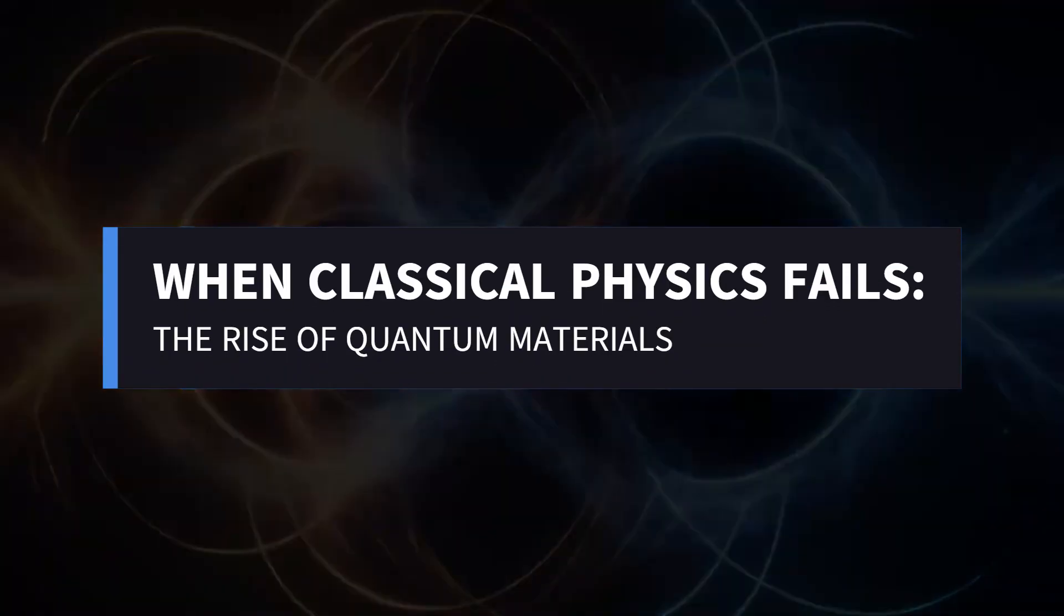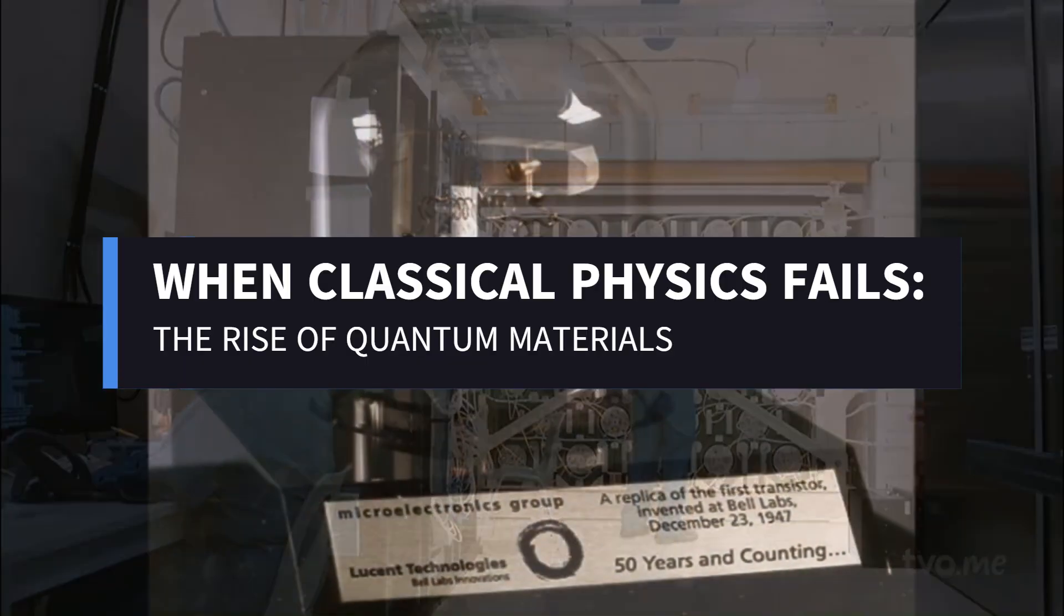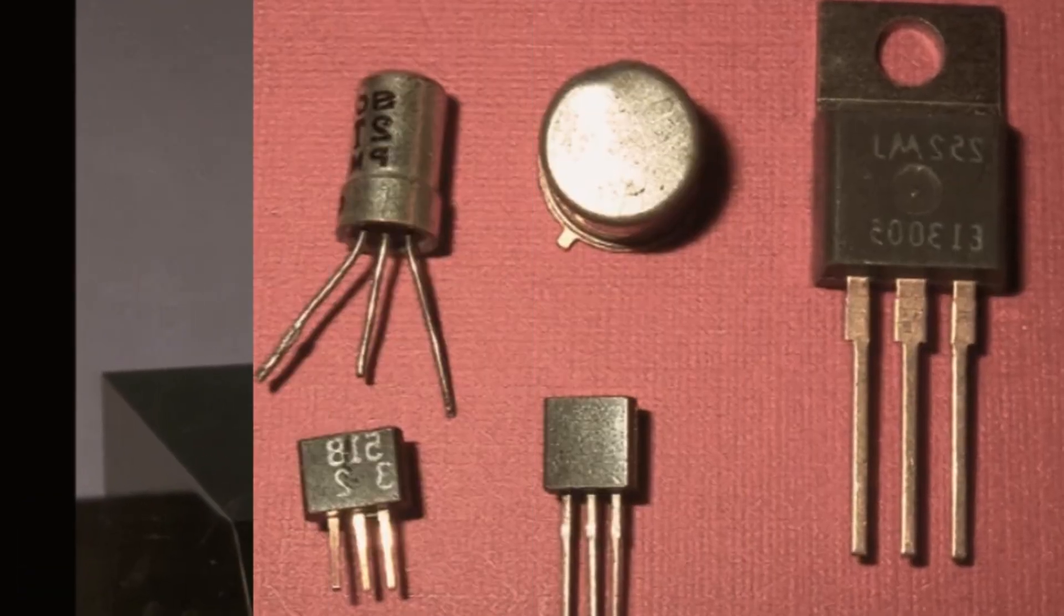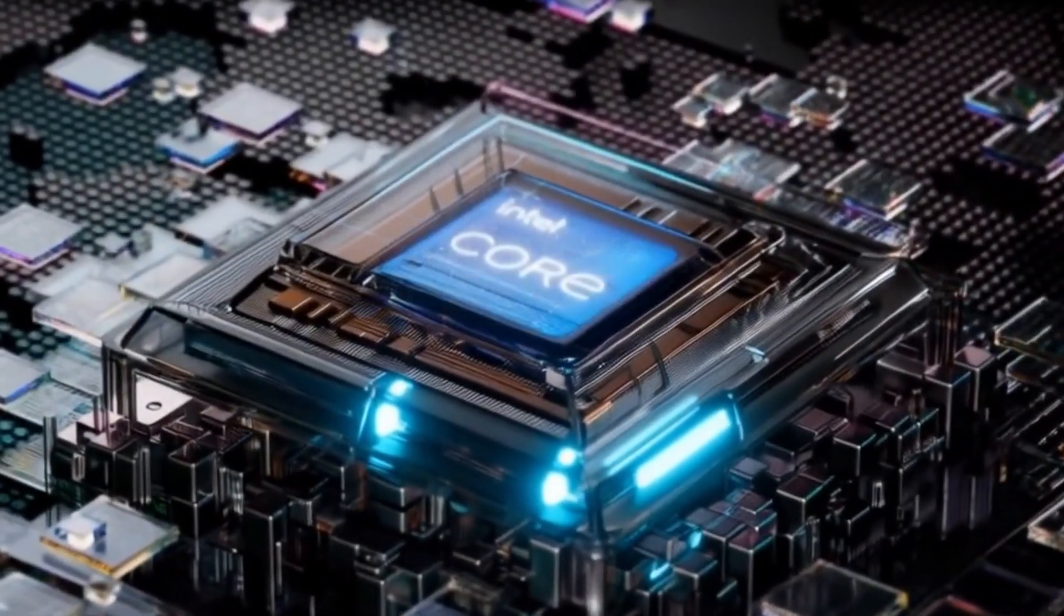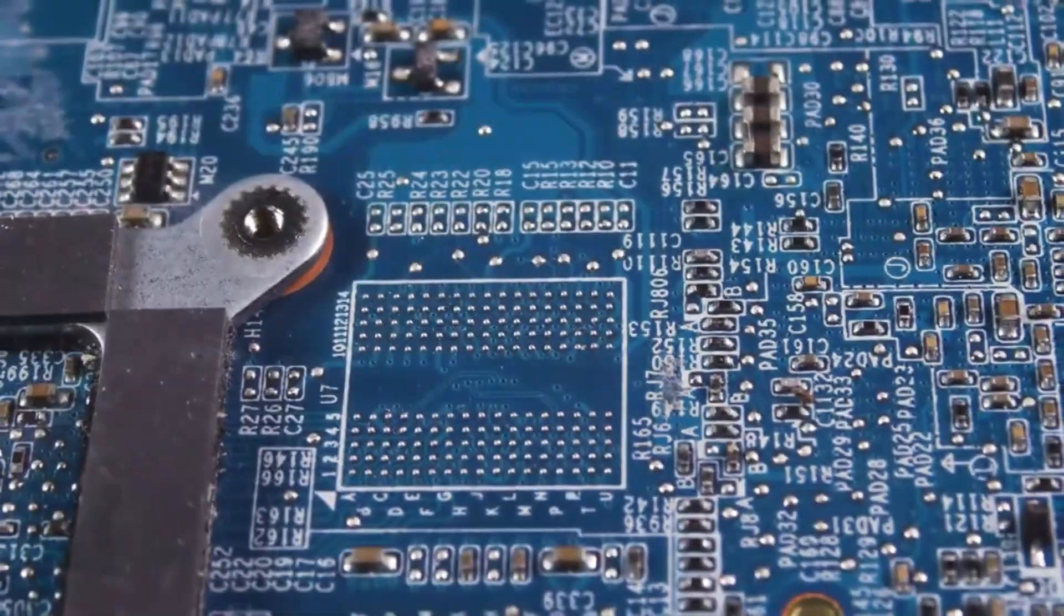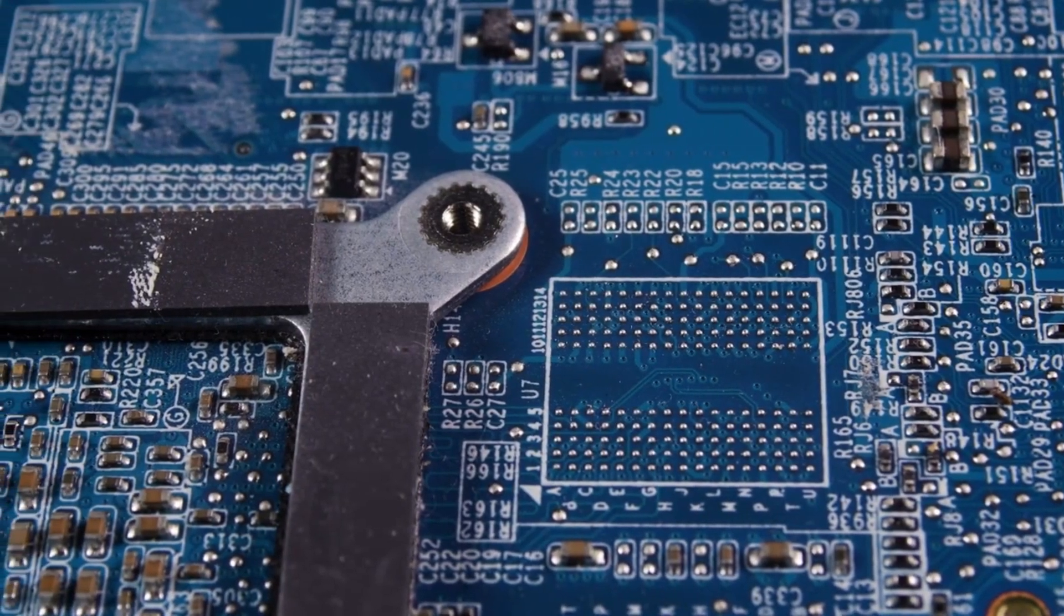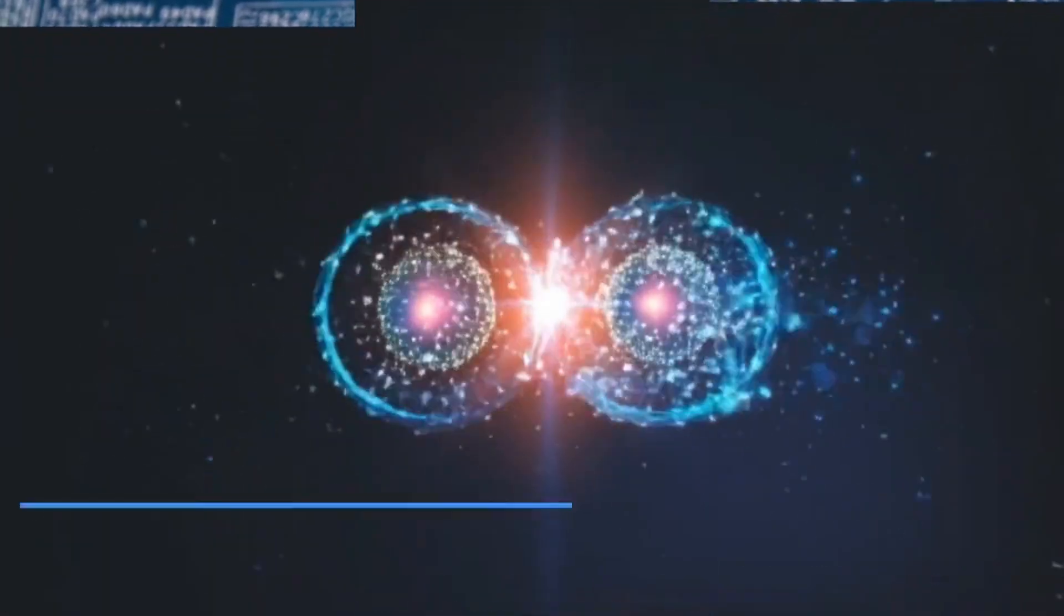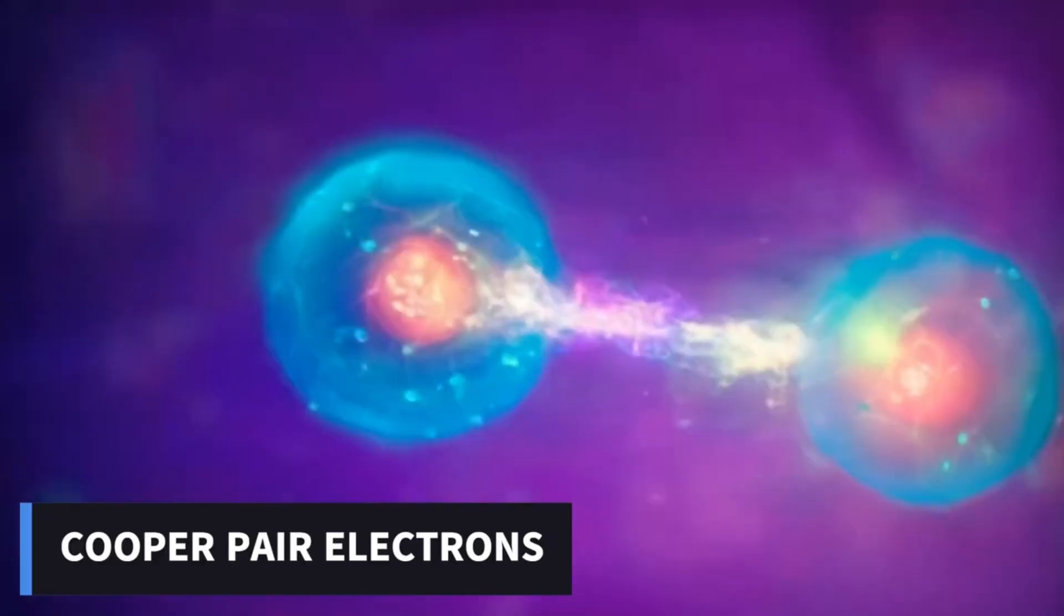Modern civilization is built on the ability to control electrons. From the first transistors to today's microprocessors, technological progress has relied on understanding how electric charges move through matter. For much of the 20th century, this understanding rested comfortably within classical and semi-classical physics. Electrons were treated as particles flowing through circuits, occasionally exhibiting wave-like behavior but largely obeying intuitive rules. As components shrank toward atomic dimensions, this picture began to fracture.